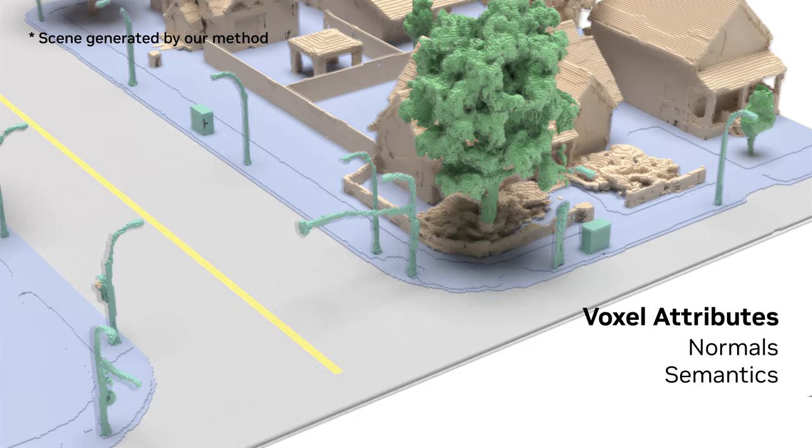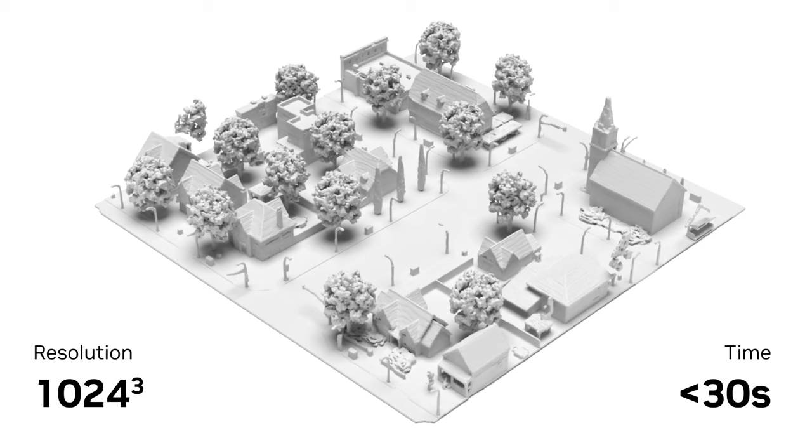By leveraging sparse voxel hierarchies, XCube can generate large-scale shapes and scenes with a resolution of up to 1024 cubed in under 30 seconds, pushing the boundary of what is possible with 3D generative models.